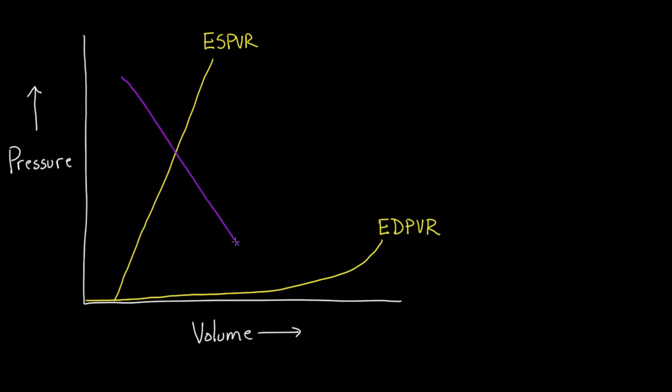Then we have this EA line, arterial elastance. There's a helpful formula: the pressure at end-systole over stroke volume. Remember, any elastance is a pressure over a volume. This red dot represents the pressure at end-systole, and this other red dot shows where it crosses the x-axis, the volume. That helps us figure out the stroke volume.